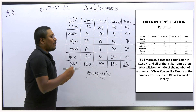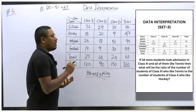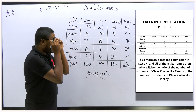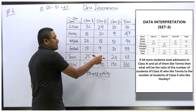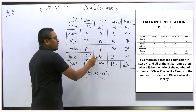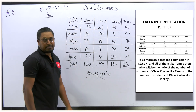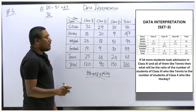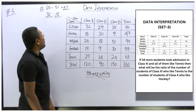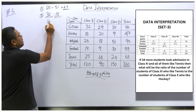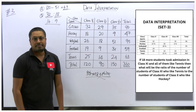Question 2: If 18 more students took admission in class 11 and all of them like tennis, what will be the ratio of class 11 students who like tennis to class 10 students who like hockey? Class 11 tennis is originally 14, plus 18 more gives 32. Class 10 hockey is 18. The ratio of 32 to 18 simplifies by dividing both by 2: 16 to 9. The answer to question 2 is 16:9.